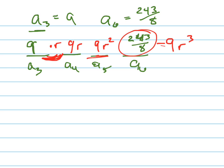A shorter way to do that, I did that so you can understand, but the shorter way is just take 6 minus 3, which is 3. That means you have to multiply 9 by r, the common ratio, 3 times to get to 243 over 8.